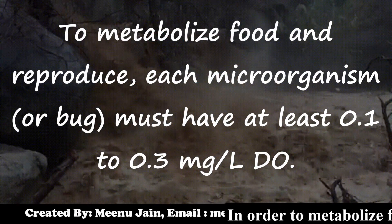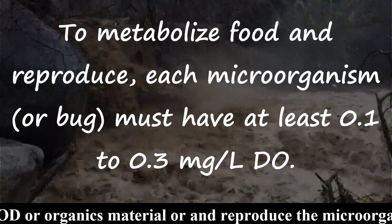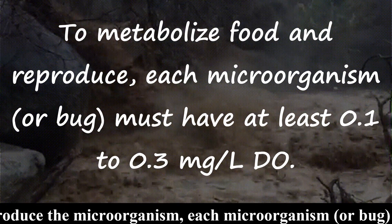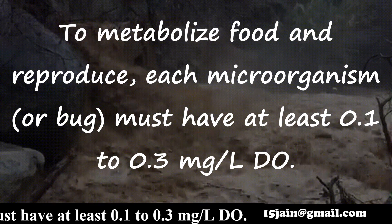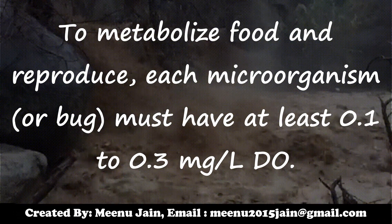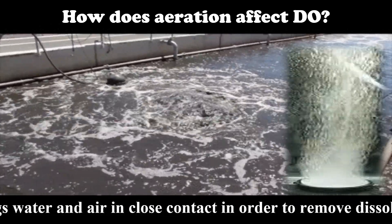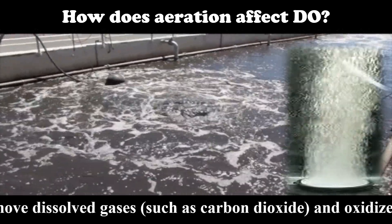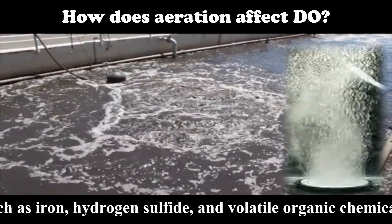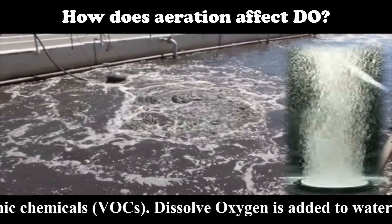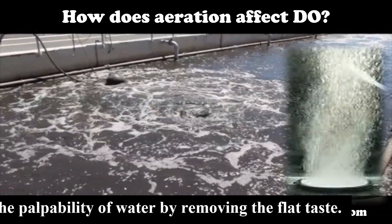In order to metabolize food — which is BOD or organic material — and to reproduce, each microorganism must have at least 0.1 to 0.3 mg per litre of dissolved oxygen. Aeration brings water and air into close contact in order to remove dissolved gases such as carbon dioxide, and oxidizes dissolved metals such as iron, hydrogen sulfide, and volatile organic chemicals. Dissolved oxygen added to water through aeration can also increase the palatability of water by removing the flat taste.